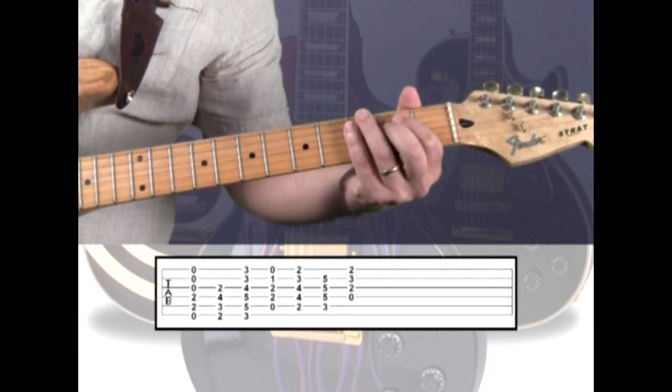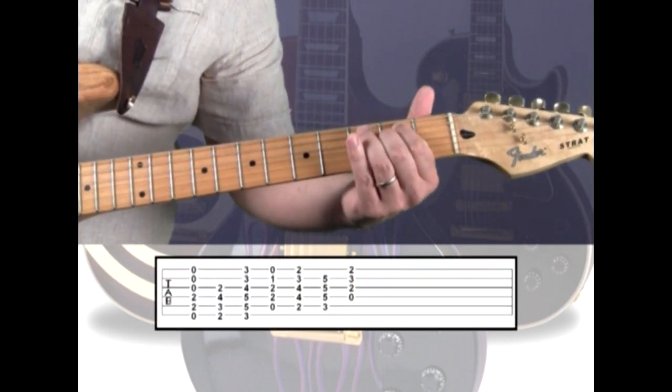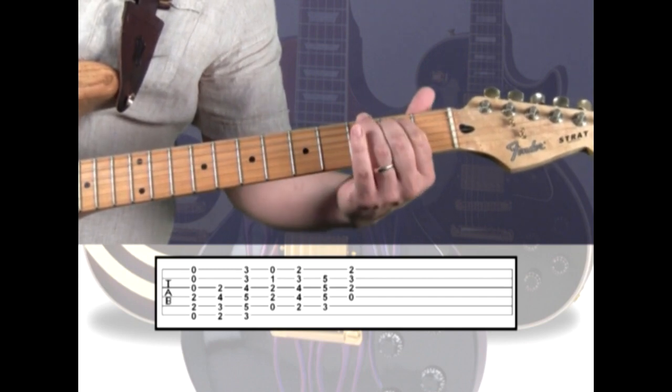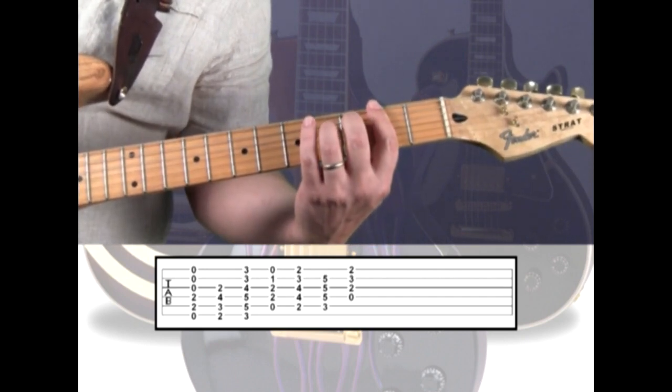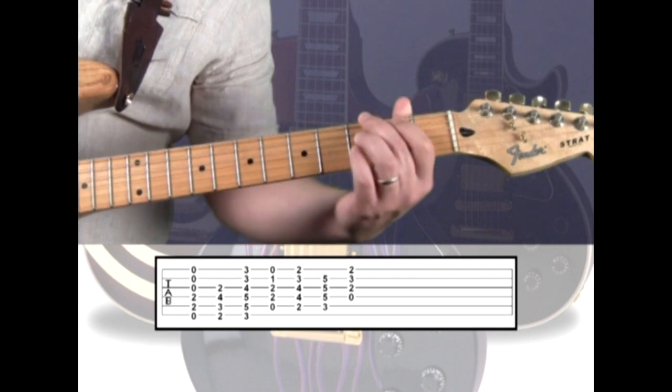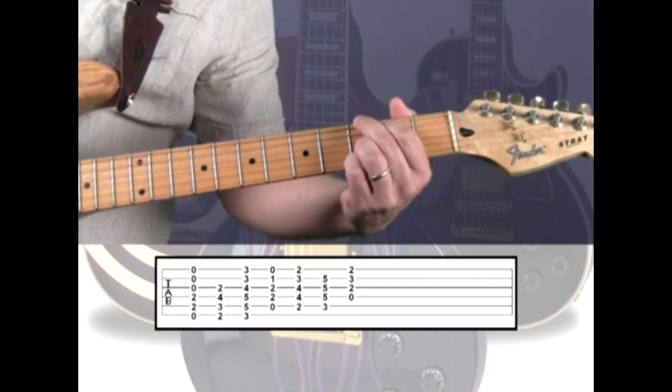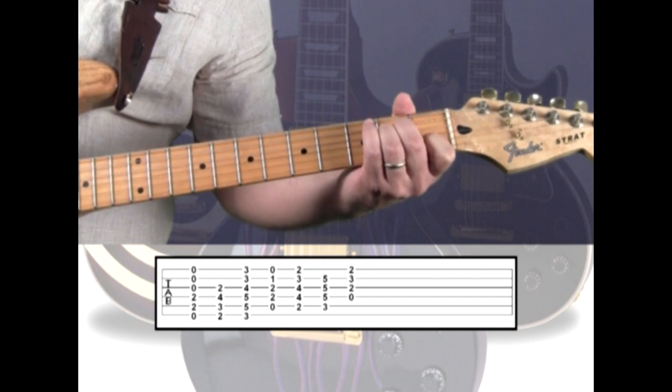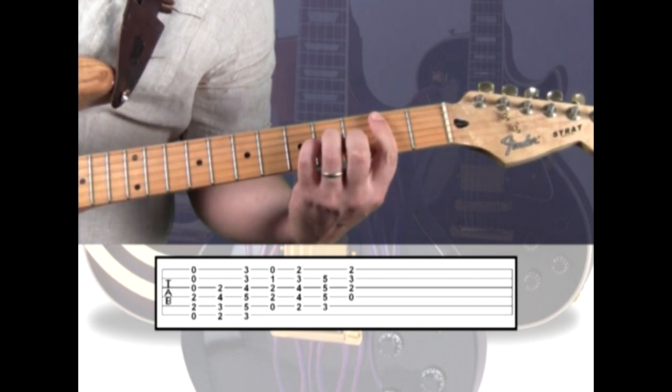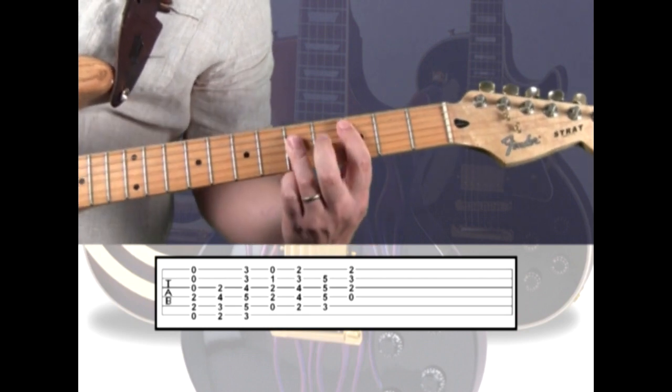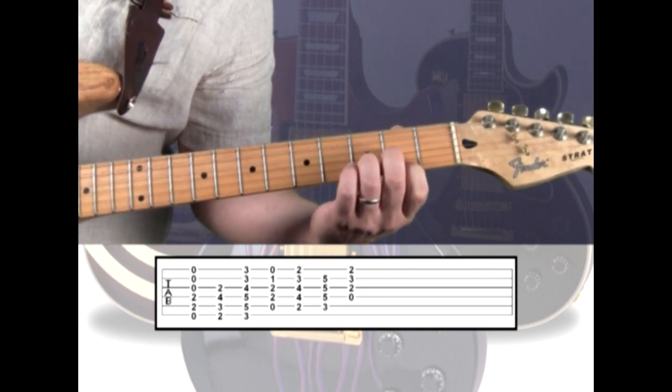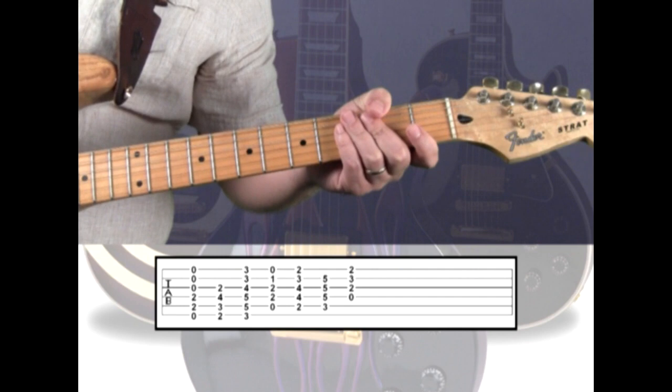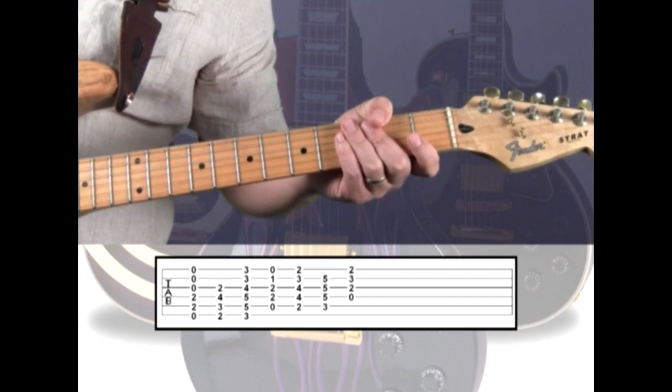When you get to harmonizing the minor scale into triads, the E becomes an E minor, F sharp becomes F sharp diminished, the G is major, A is minor, B is minor, C is major, and D is major. Any combination of these chords will be your hint that the scale used is E minor, or E minor pentatonic.